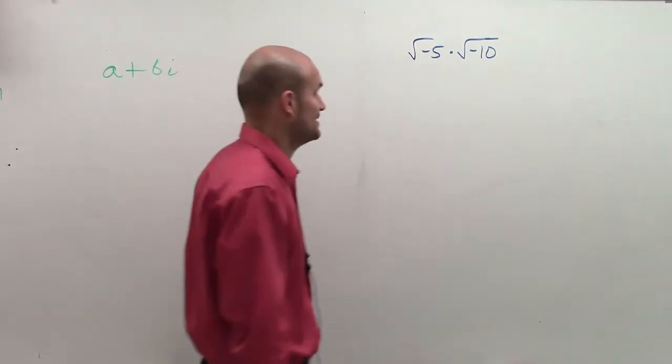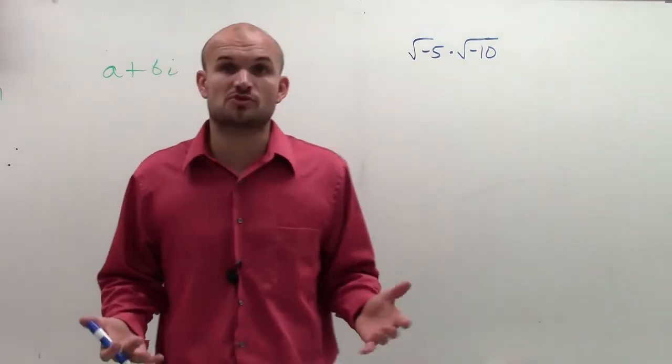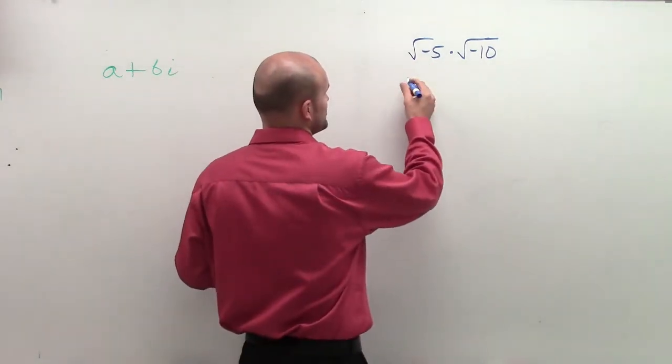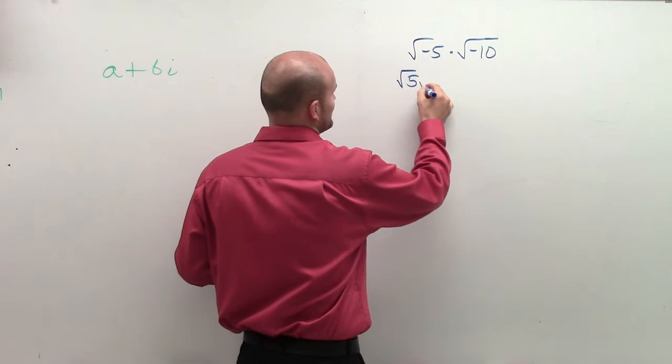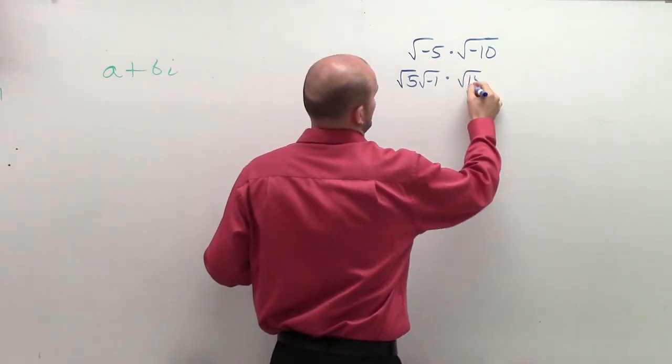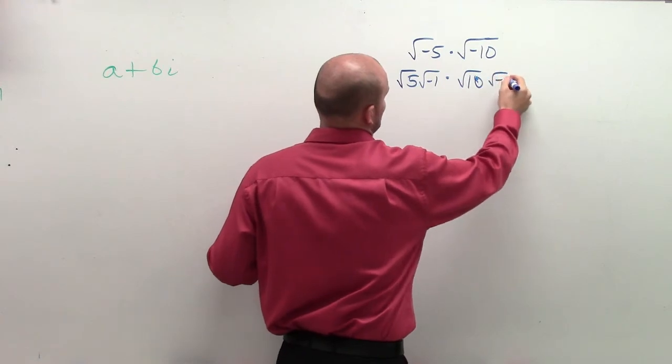So I can kind of do this in two different ways. The first way is we can use the principal square root method, which tells us we can break each one of these up into the square root of 5 times the square root of negative 1. And this would be the square root of 10 times the square root of negative 1.